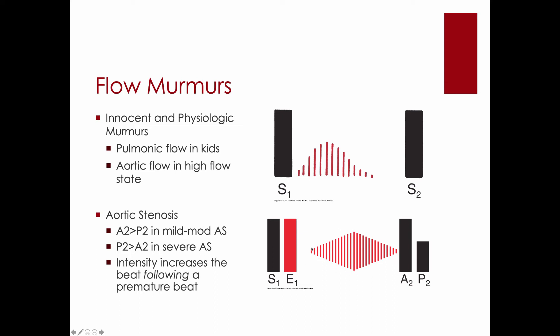The louder the murmur is, and the more harsh, does not mean the more severe the stenosis. What means the most severe stenosis is how late this peaks. If it peaks so late that it overtakes the second heart sound or the A2 component of the second heart sound, then that's severe aortic stenosis.